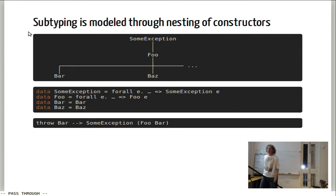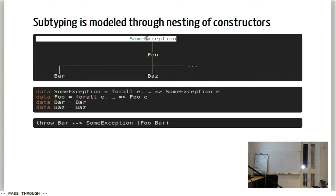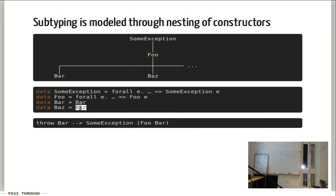If you want to model this hierarchy — some exception at the top, then a subtype Foo, then two subtypes Bar and Bus — you would have two existential types. SomeException is an existential that can wrap any type. Foo is an existential wrapping specific types. Then you have data types Bar and Bus. If you say 'throw Bar', you end up with a value that is the Bar constructor wrapped with Foo, wrapped with SomeException.